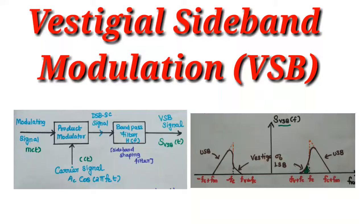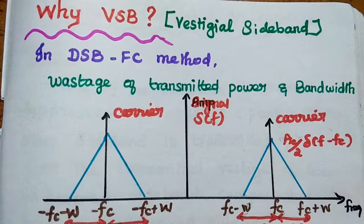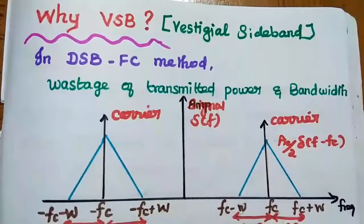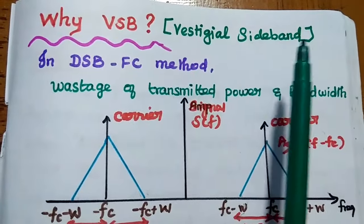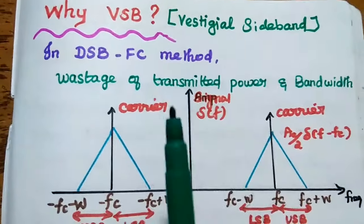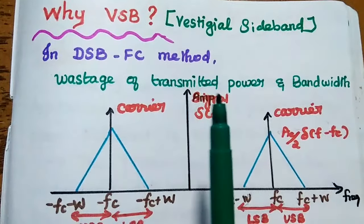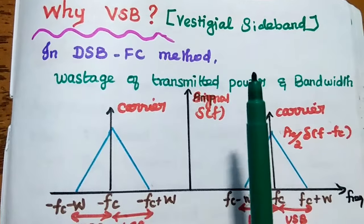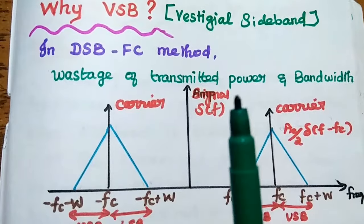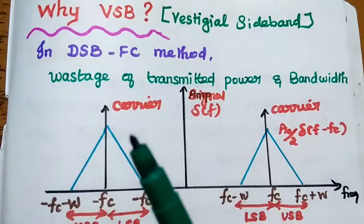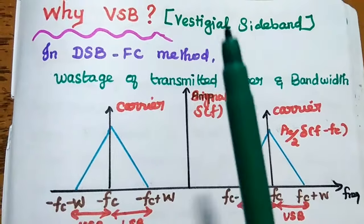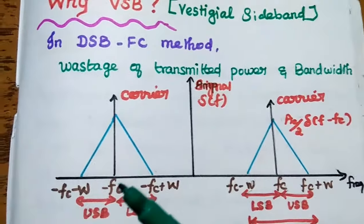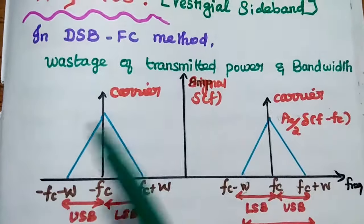Dear students, now we are going to discuss Vestigial Sideband Modulation System in detail. Let's start with why VSB is required. VSB means Vestigial Sideband Modulation Method. Though we have different types of amplitude modulation techniques, there are still some problems. In order to overcome the drawbacks of the previous methods, we move on to VSB. Let's see what the major issues are in the previous techniques, one by one.